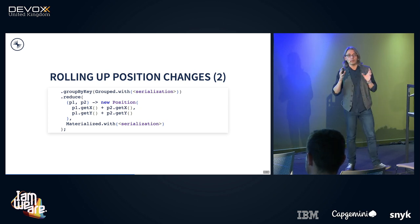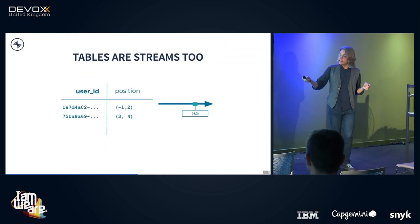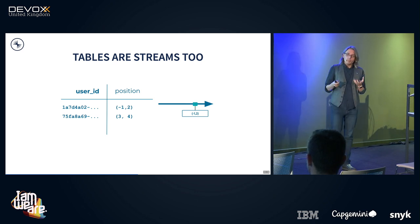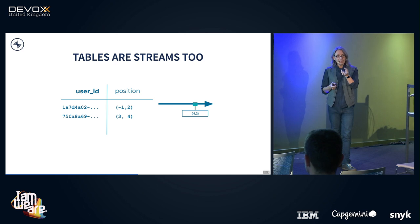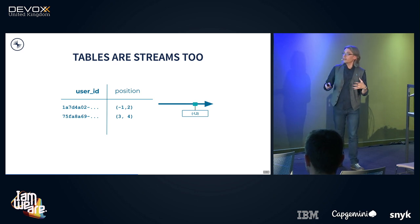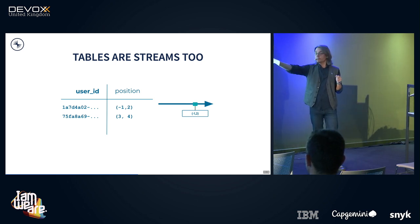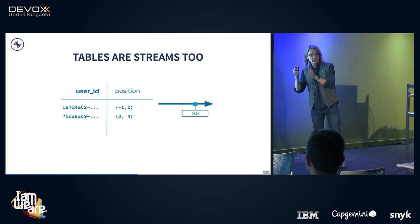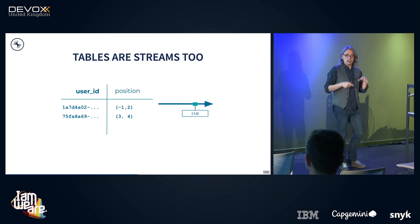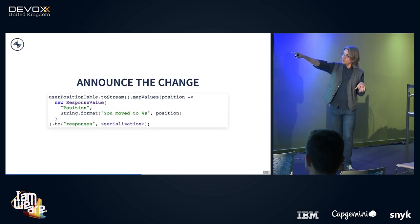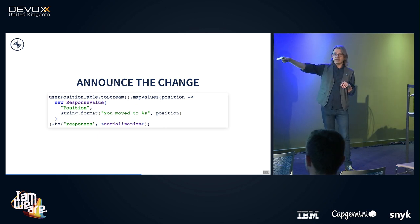That gives us a table — a table of every user and where they are in the world. The interesting thing about tables in Kafka is they behave a lot like a database table you're used to, but they're also live — they have a leading edge of what the latest changes are. We can turn that table of positions into a new stream saying 'this user has just updated their position to minus one, two'. So it's almost a static table, but also live with latest changes, which can itself behave like a stream.